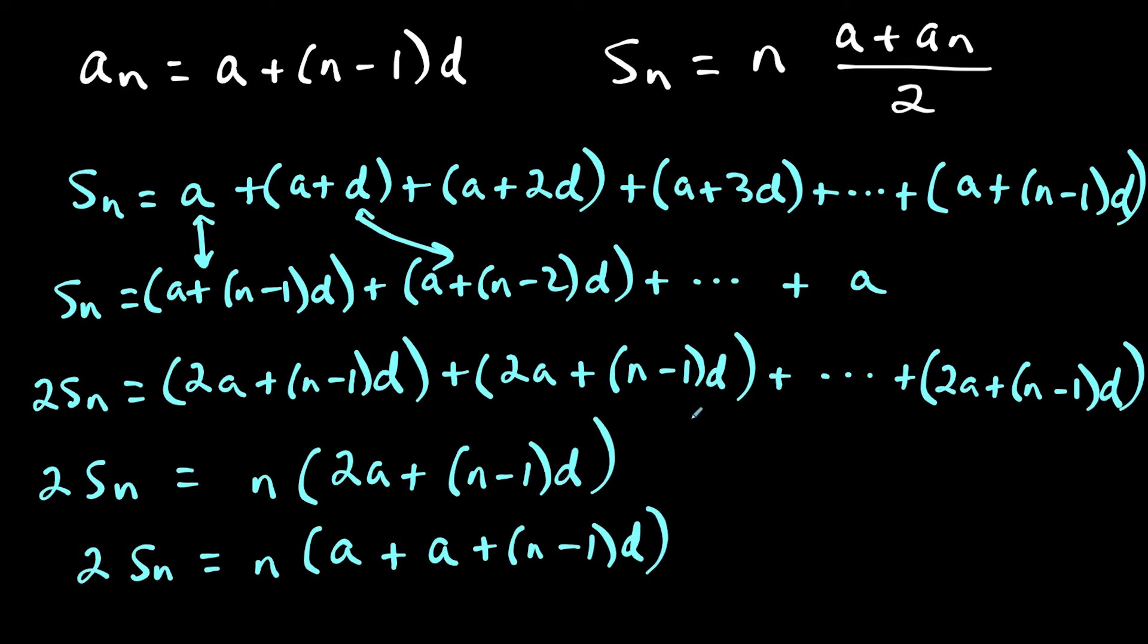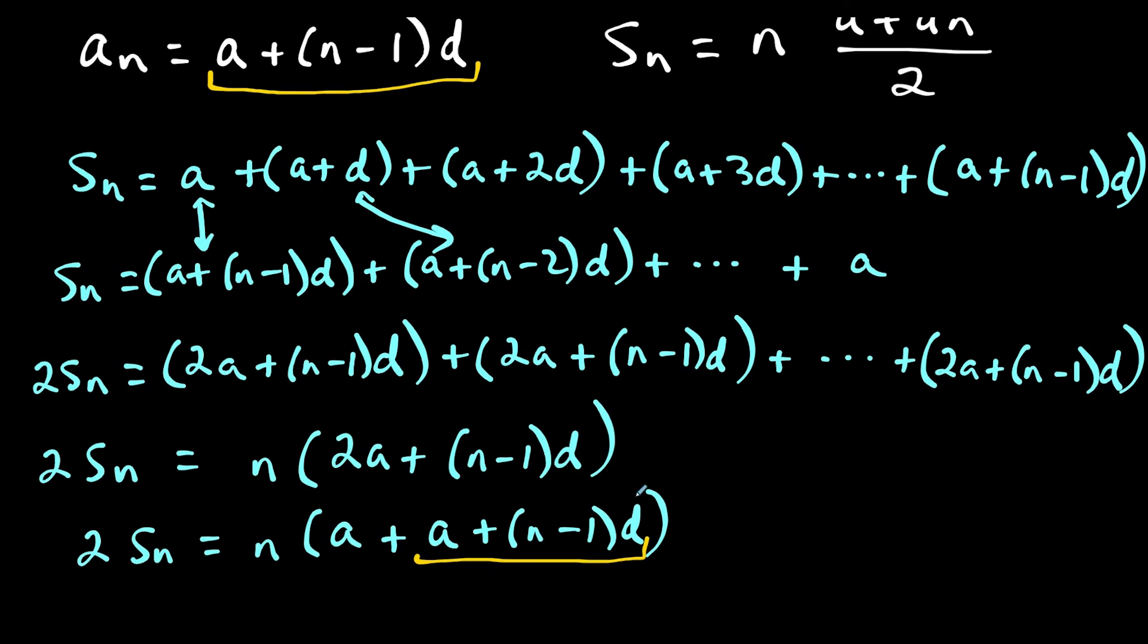And from this step here, notice a plus n minus 1 times d is exactly equal to a sub n. Notice how this term shows up here, we have a plus n minus 1 times d. And we have a plus n minus 1 times d. So we can make the substitution here. Let's give ourselves some space.